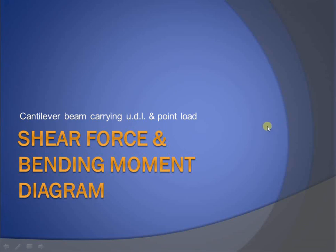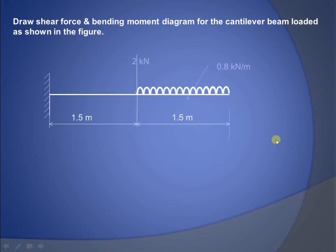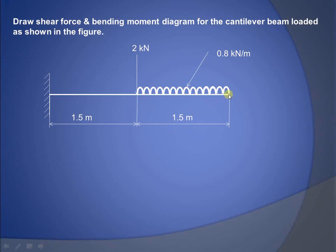In this video we will understand how to draw the shear force and bending moment diagram for a cantilever beam carrying a uniformly distributed load and a point load. The cantilever is subjected to loads as shown: a UDL of 0.8 kN per meter over a distance of 1.5 meters from the free end, and a point load of 2 kN at a distance of 1.5 meters from the free end.